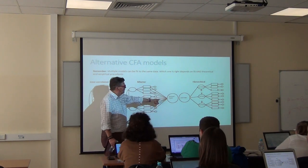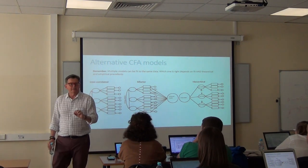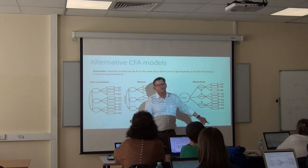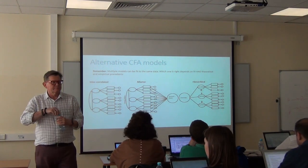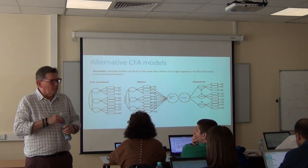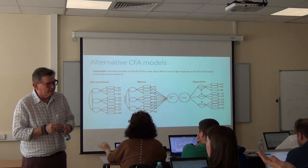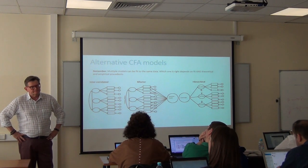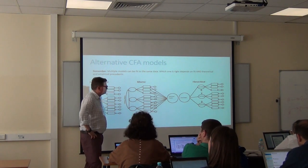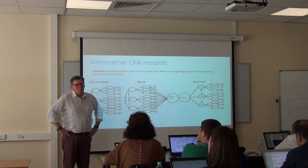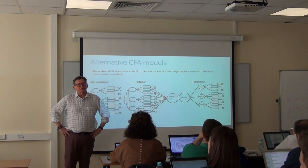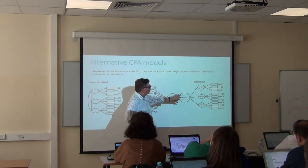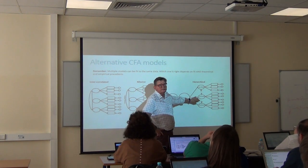In the bi-factor model, the common general factor influences the items directly. In the hierarchical model, the general overarching construct influences the factors, not the items directly. For example, if I have a math item and a general math factor influencing statistics, algebra, and geometry — the difference is in where and how the general factor relates to the actual manifest variables.